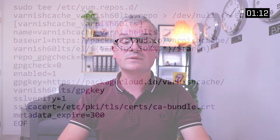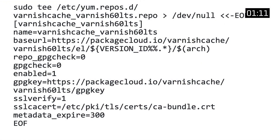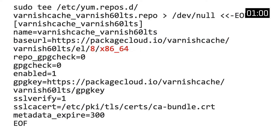Now it's time to register the package repository. We do this by adding the following configuration to a specific repo file that is read by the YUM package manager. It contains the URL of our package repository, which in turn has some variables that need to be parsed. So for example, a 64-bit x86 system running on Enterprise Linux 8, this would be the resulting string.